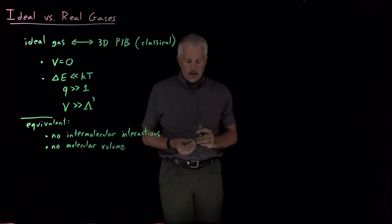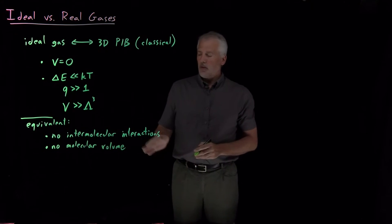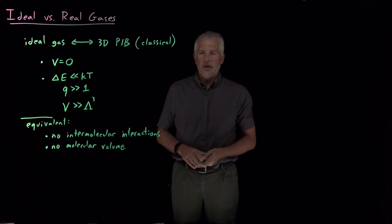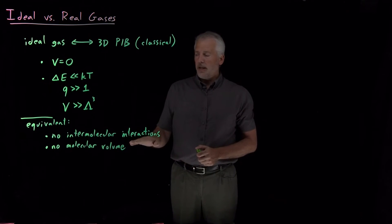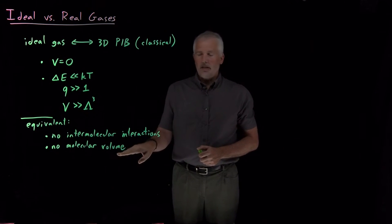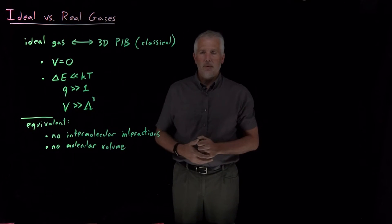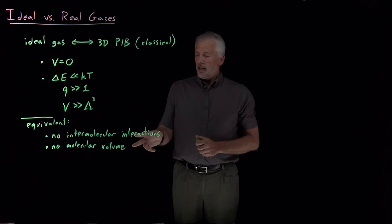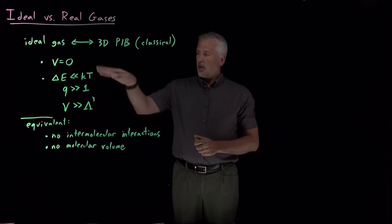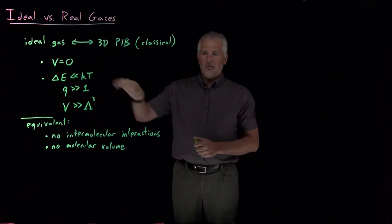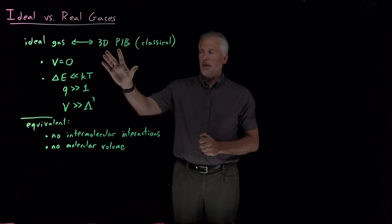And the second condition is the molecules can't take up any space. So typically, in a general chemistry course, the way the assumptions behind the ideal gas model would be phrased is a gas will behave ideally if the molecules don't interact at all, and if the molecules themselves are so tiny that we can totally ignore the fact that they take up any space.